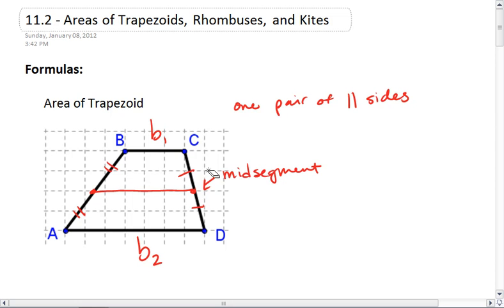The reason we really like the midsegment is because we could cut off these two little triangles here, swing them around and stick them up top.